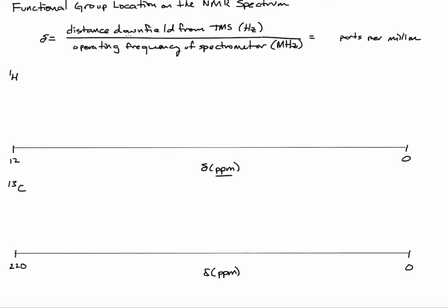So let me explain exactly what this means. So distance downfield from tetramethylsilane. So tetramethylsilane occurs at 0 parts per million in the proton NMR. So here's tetramethylsilane. It occurs at 0. So the chemical shift of our functional group is going to be relative to tetramethylsilane.